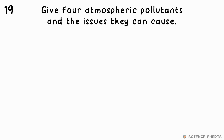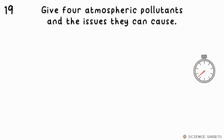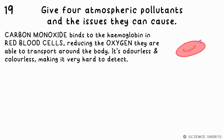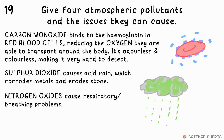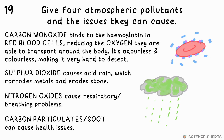Question 19. Give four atmospheric pollutants and the issues they can cause. Carbon monoxide is poisonous. Sulfur dioxide causes acid rain, which corrodes metal and erodes stone. Nitrogen oxides can cause respiratory problems, and carbon particulates, or soot, can cause various health issues.